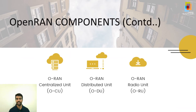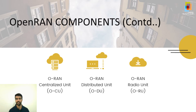The open RAN centralized unit, or CU, runs the radio resource control, the packet data convergence protocol, and service data adaptation protocol layers. The CU controls the operation of several DUs over the mid-haul interface. The open RAN distributed unit, or DU, sits close to the radio unit and controls the radio link control, medium access control, and parts of the physical layer. The CU controls its operation.